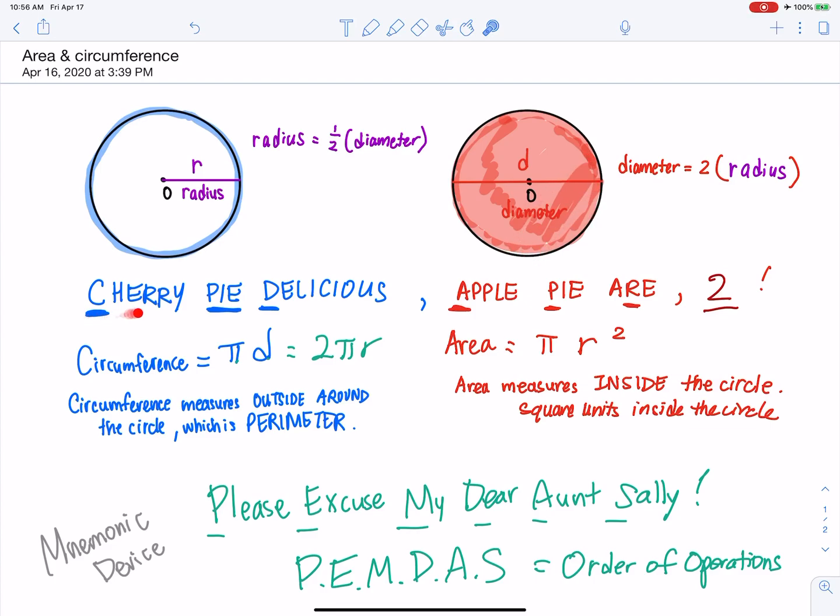Cherry Pie Delicious Apple Pie R2. Circumference equals pi times diameter. Area equals pi r squared.